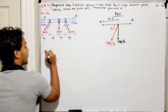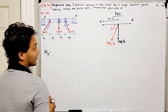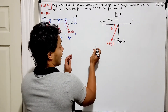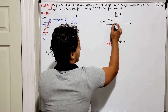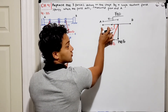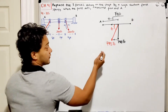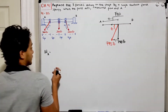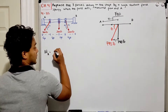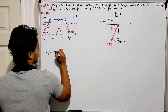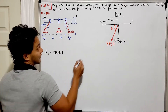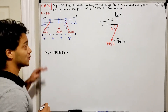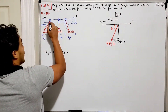Taking moments about point A — the x-component of the resultant has no moment arm distance from A, so it produces no moment. What remains is the y-component of 740 pounds multiplied by the unknown distance x, which must equal the total moment from the original three forces.